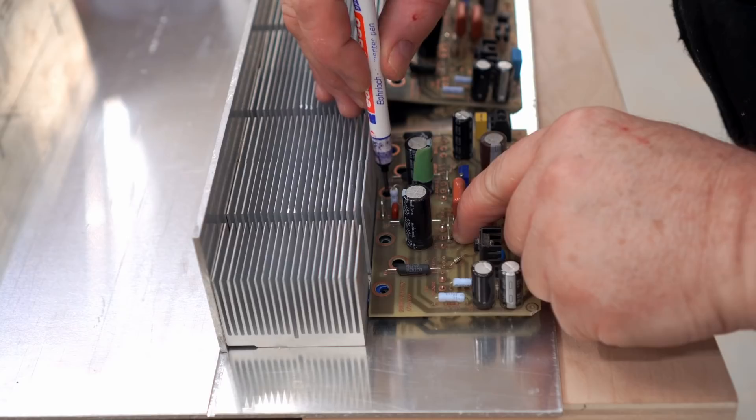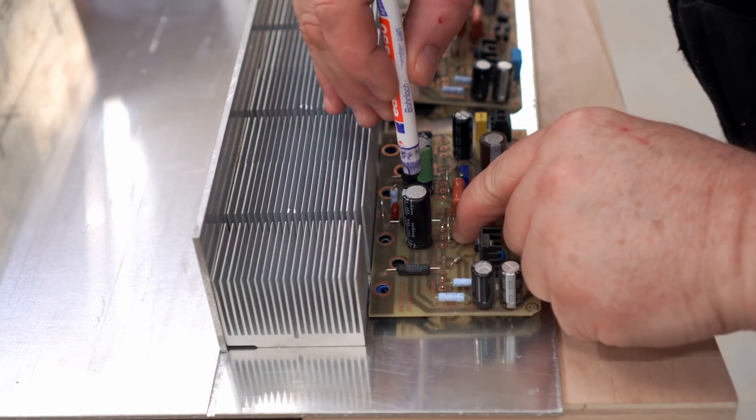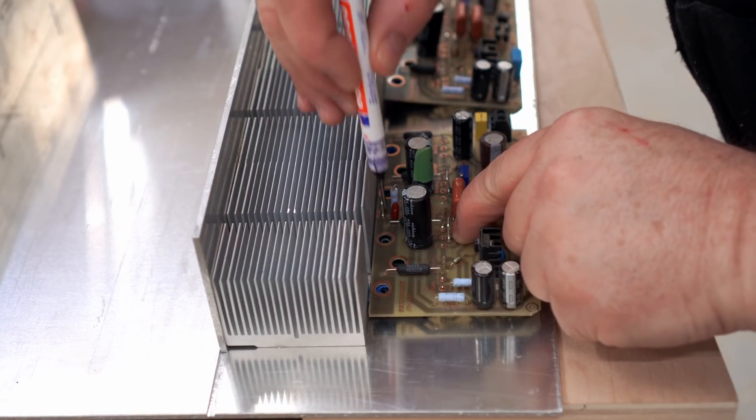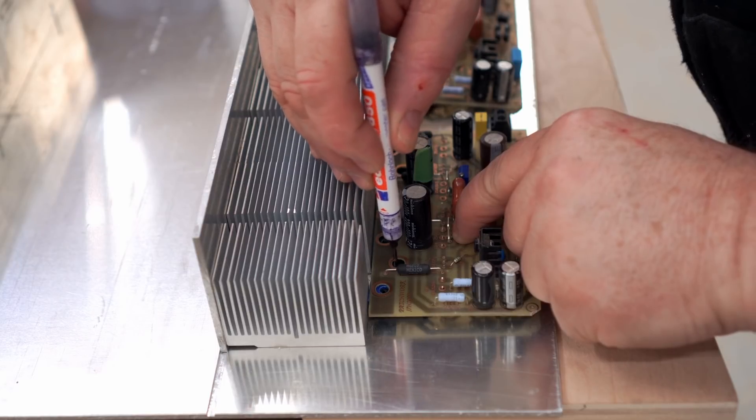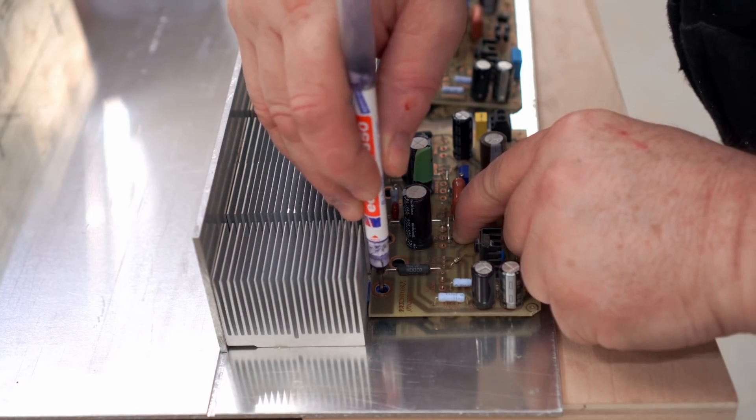Next, I can take the individual amplifier boards and mark out the holes that I need to drill for the screws that will hold the output transistors down to the bottom panel. I designed this so that those would be as close as possible to those heat sinks.